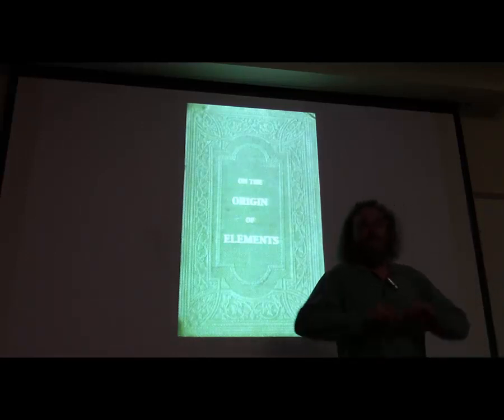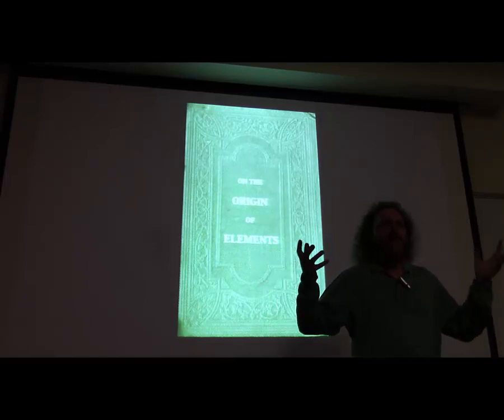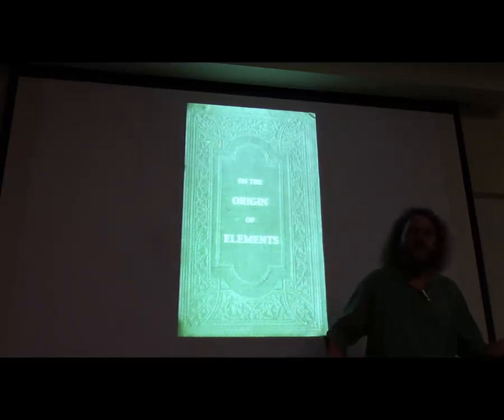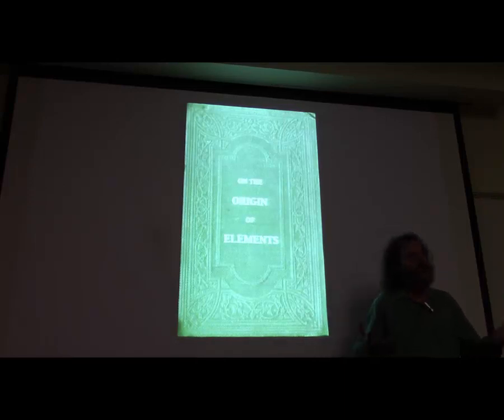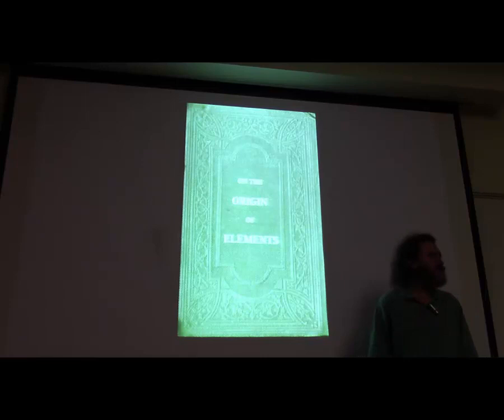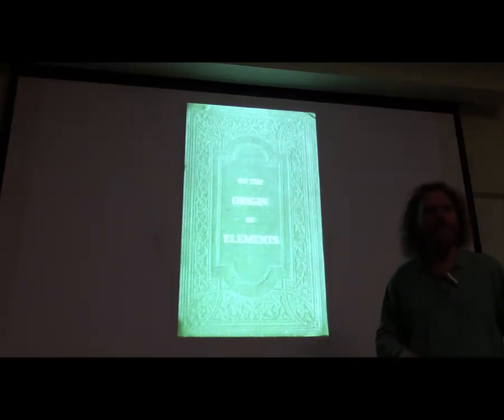This is the 150th anniversary of the periodic table of elements. People realized in the 19th century that all objects in the world, if you break them down into their basic atoms, there are only a relatively small number of types—only about 90 that exist on Earth and in the solar system. This talk is about where those different types come from.